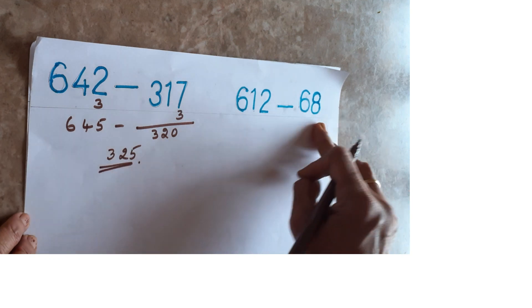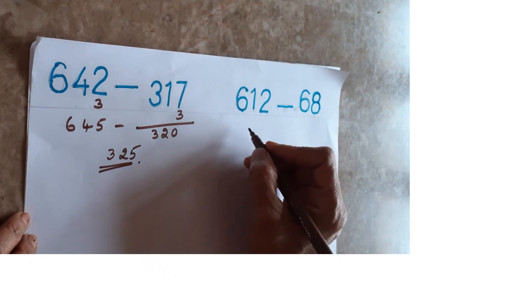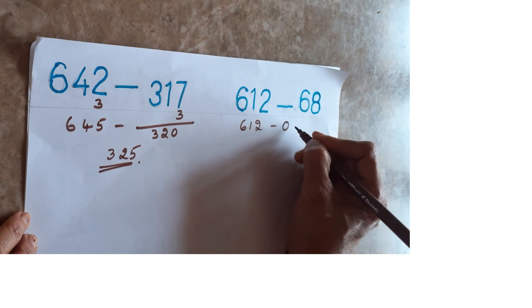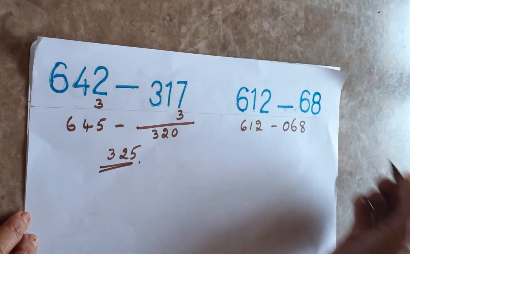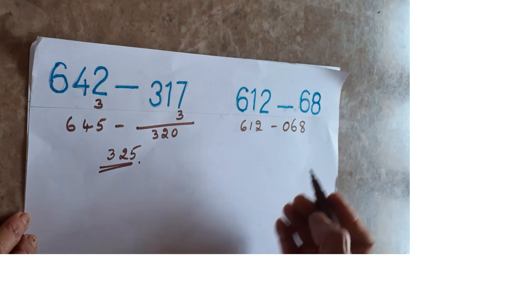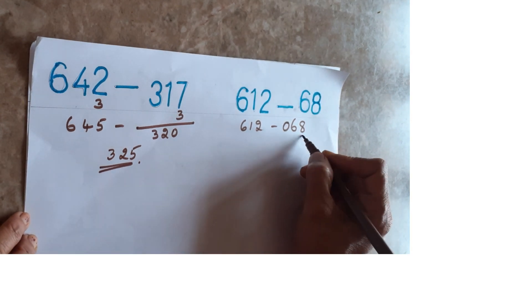Now if suppose here 3 digit is there, here only 2 digits is there, that time what you have to do? Take 612 minus 068. Instead of that place, you have to take 1, 0, and 68. Now same way, what to do? 8 means what you can add? 2.